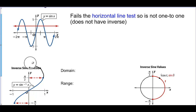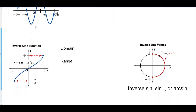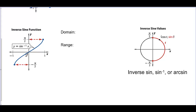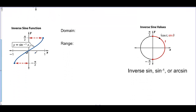We want to investigate inverse sine and allow it to be a function. In order to do that, we just have to restrict the domain. Actually, we're going to restrict the range. The range only goes from negative pi over 2 to pi over 2, so we get both negative and positive values. The domain of inverse sine is negative 1 to 1, and the range is negative pi over 2 to pi over 2.